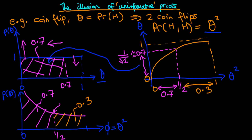Another way to think about this leftward shift: in the range zero to one, theta squared is always less than or equal to theta, and because it's always less than or equal to theta, we need to shift our probability mass to the left.